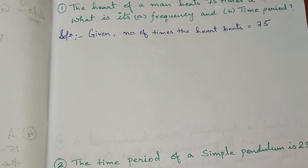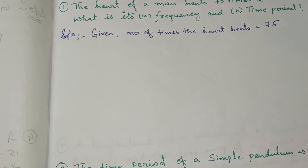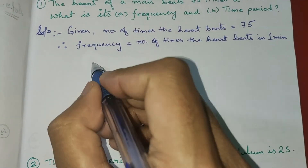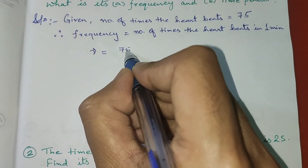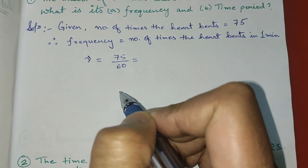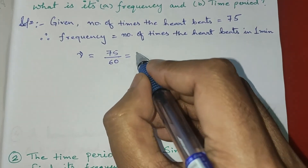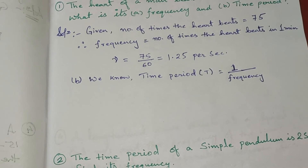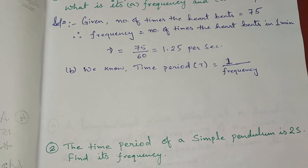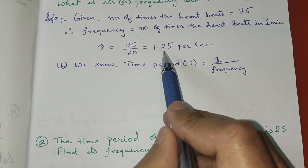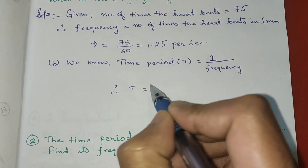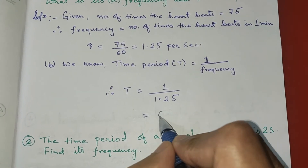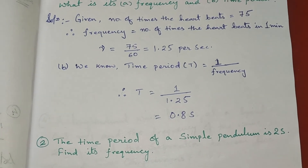Frequency is equal to the number of times the heart beats in one minute. So frequency ν = 75 divided by 60, since there are 60 seconds in one minute. Dividing gives 1.25 per second. For the second part, time period T = 1 upon frequency = 1 upon 1.25, which equals 0.8 seconds.